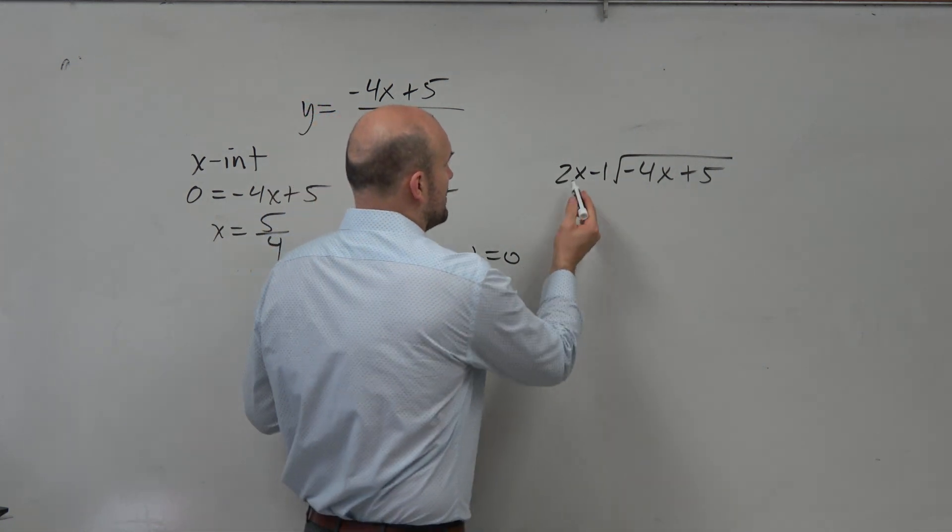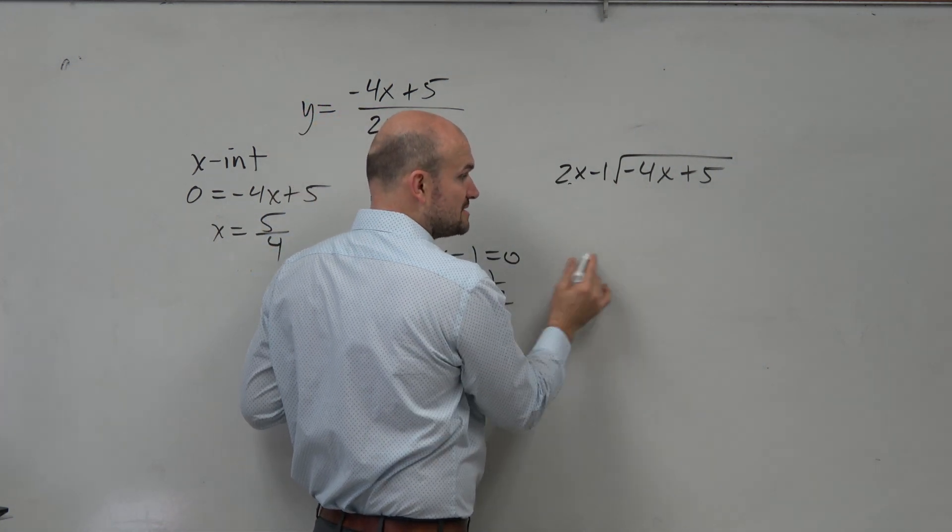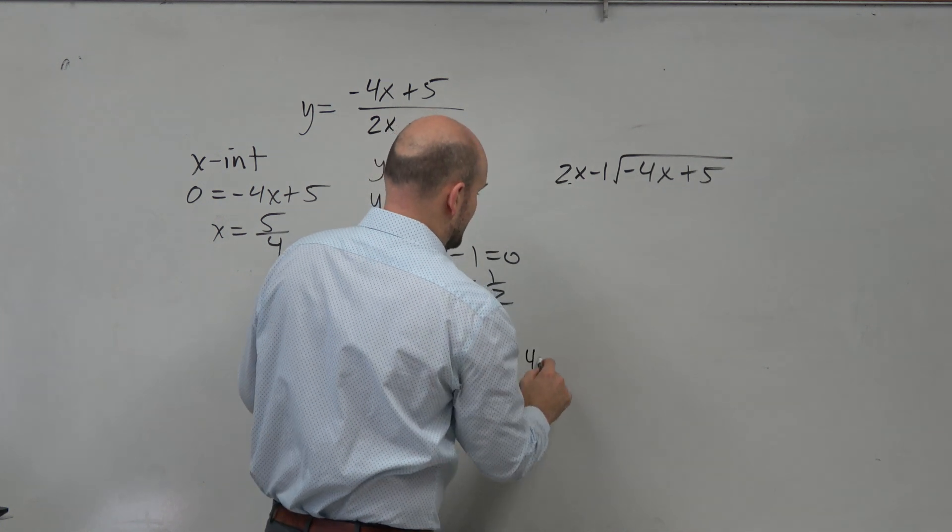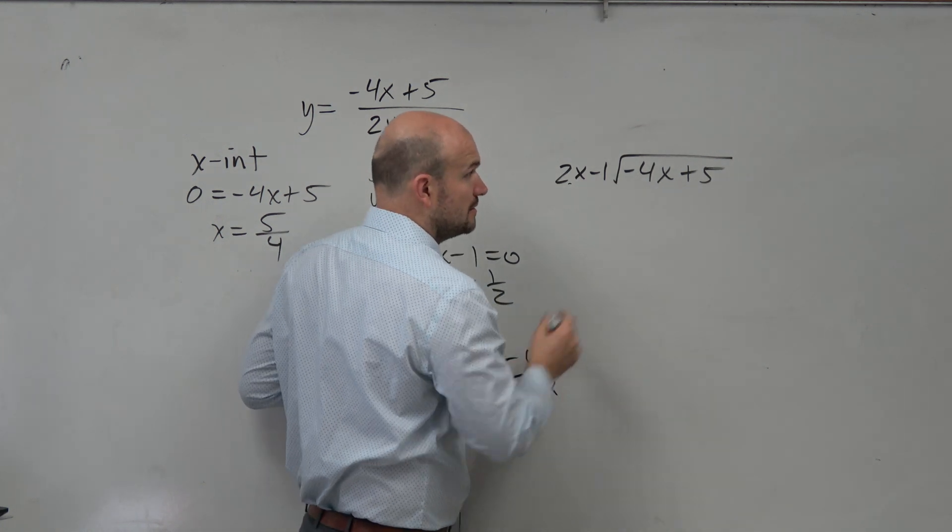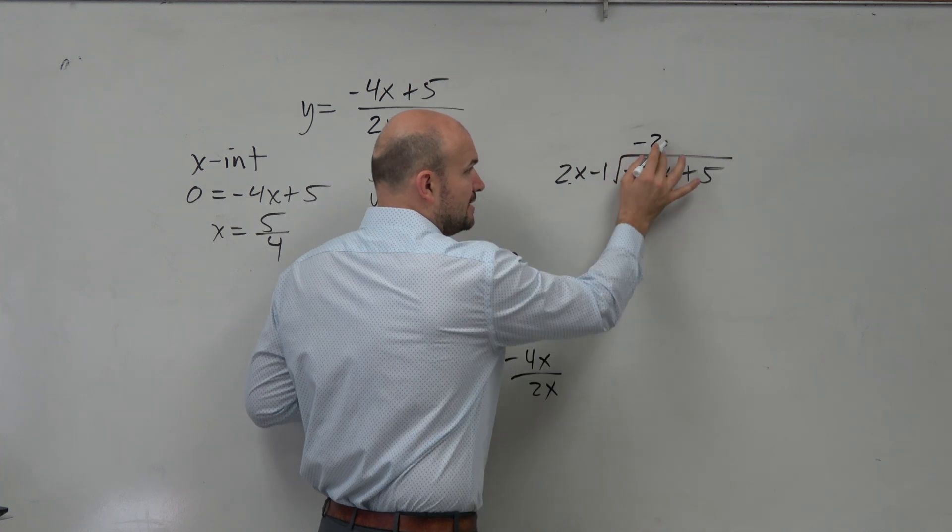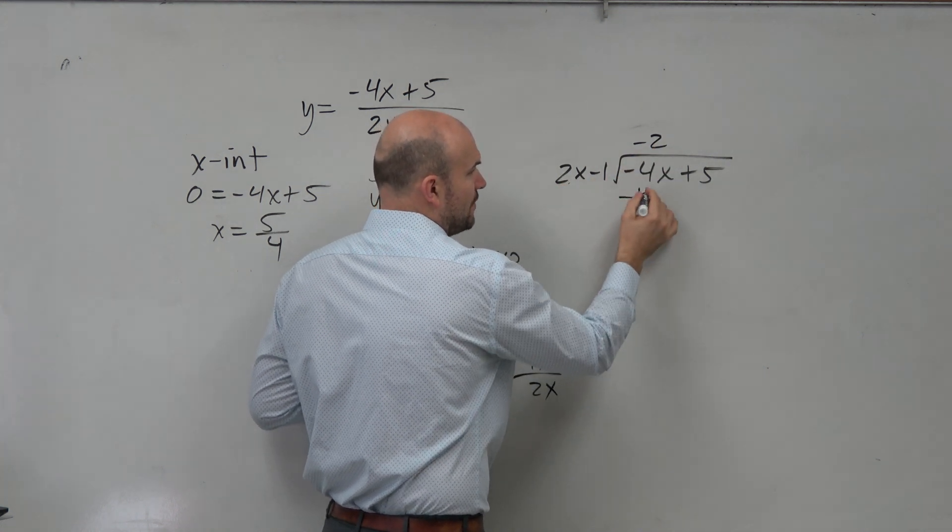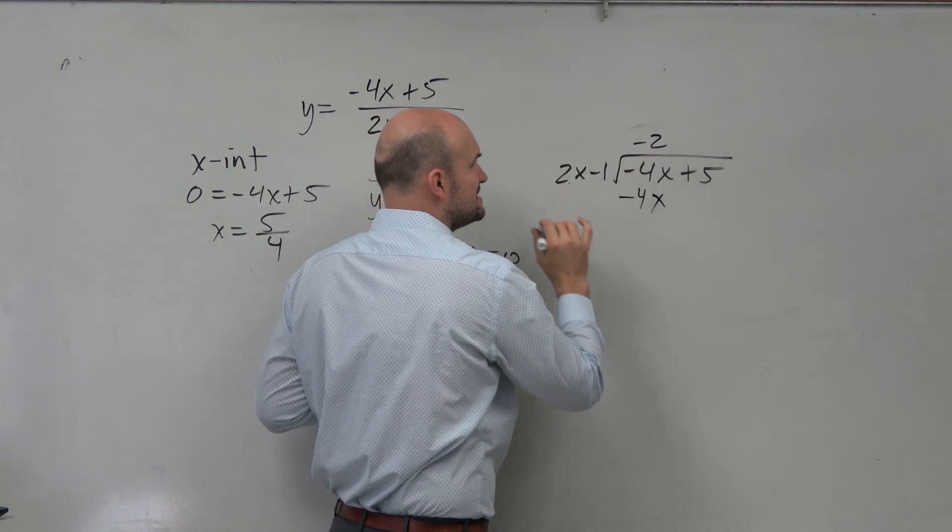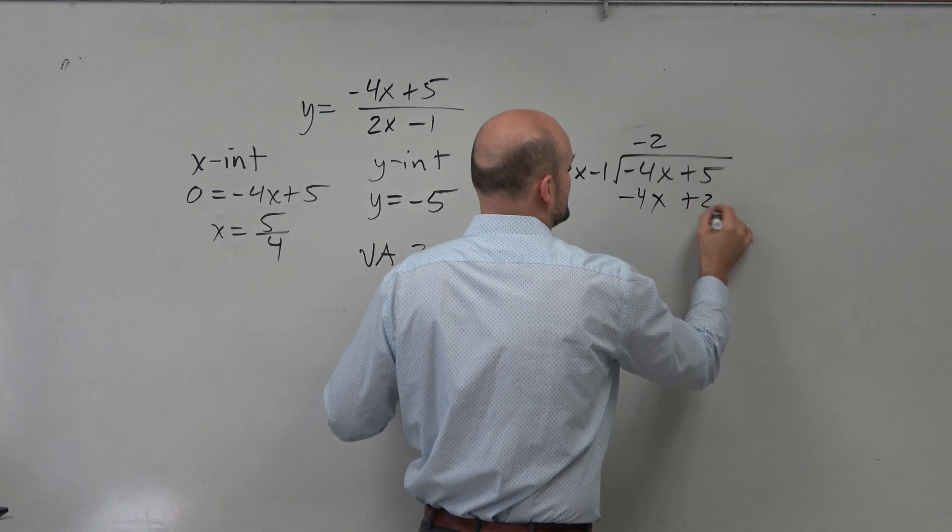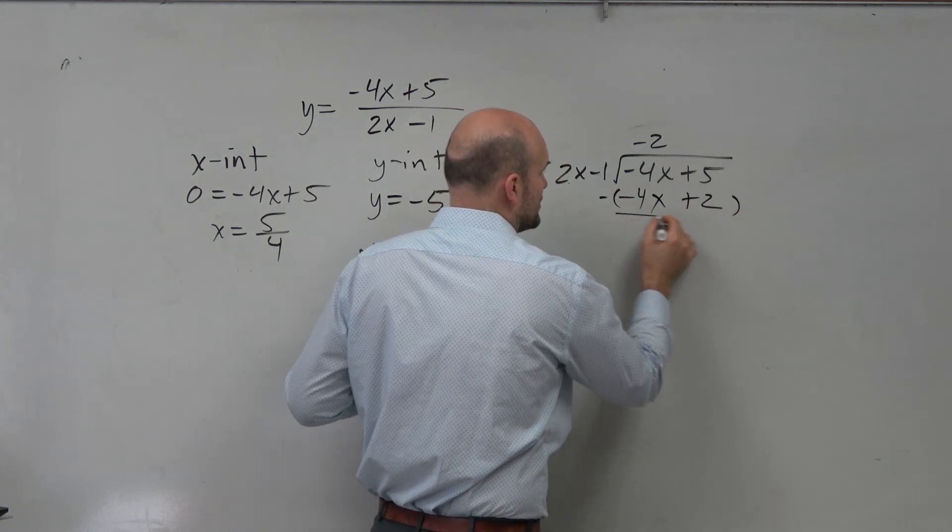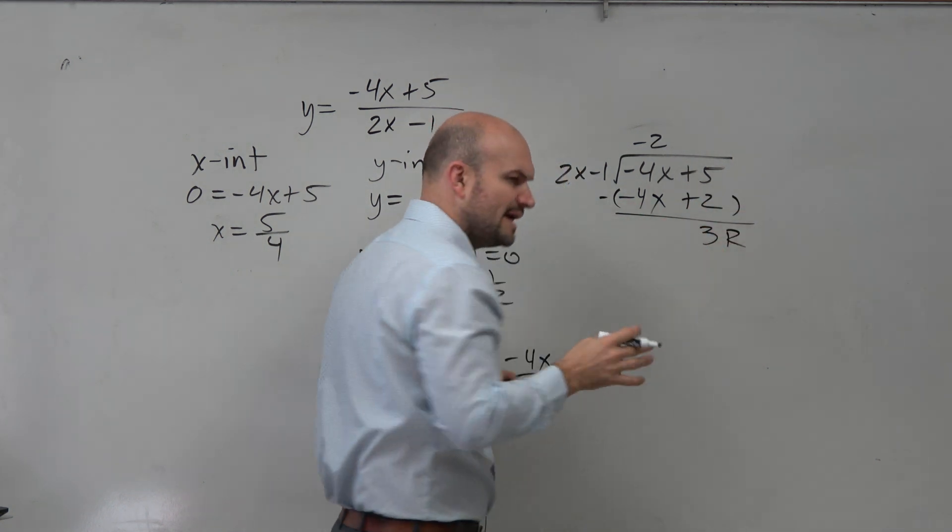So we go forward and say, how many times does 2x go into negative 4x? Negative 4x divided by 2x is negative 2. Negative 2 times 2x is negative 4x. Negative 2 times negative 1 is positive 2. Subtract your rows. 3 remainder.